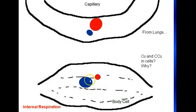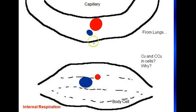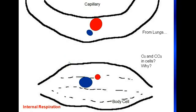So what you're going to see in a cell is a higher concentration of carbon dioxide and a lower concentration of oxygen — because the cell used the oxygen, and when it used the oxygen to make energy, it produced CO2. This process between the blood in the capillary and the cells of the body is called internal respiration. Following the basic rules of diffusion, which way is oxygen going to move and which way is CO2 going to move?